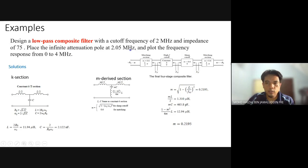Based on this four-stage composite filter, we do some calculations. We take the first part to design the low pass composite filter using the K-section, constant K T-section. We use this T-section configuration and derive the calculations based on the parameters given. R0 is 75 ohms, omega C is given, so we include the value and calculate L and C.